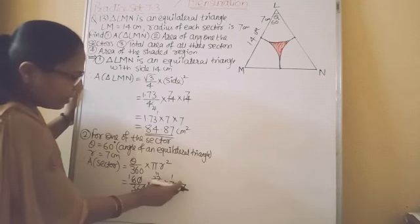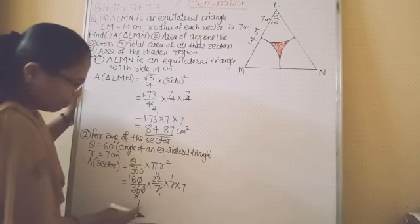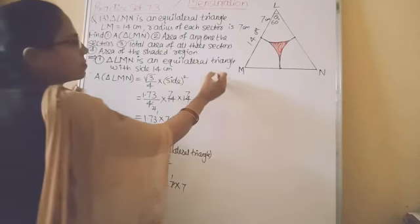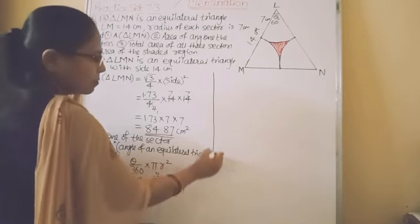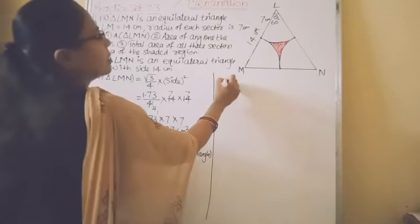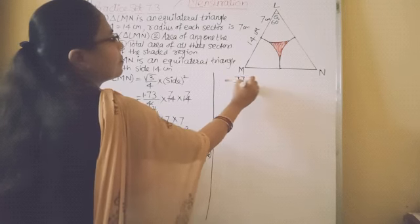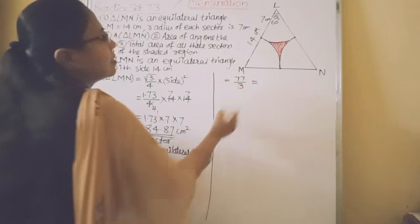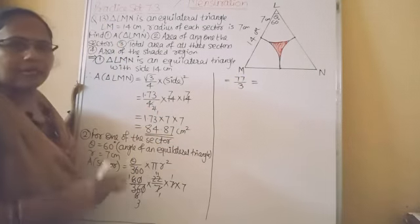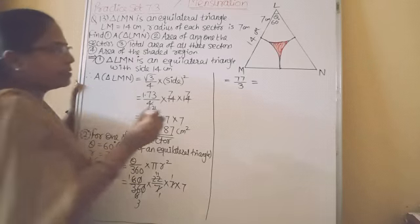77 upon 3 equal to 77 upon 3. Now, divide this. Find the answer up to 2 decimal plus digit.